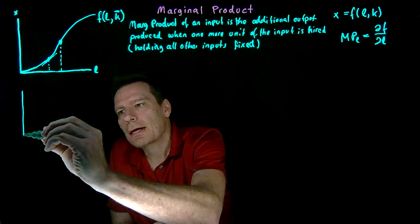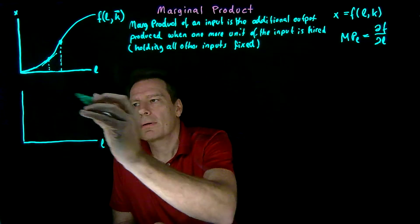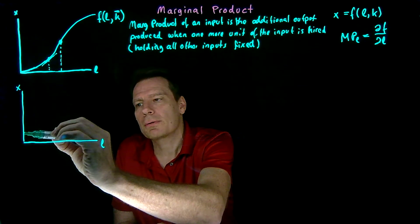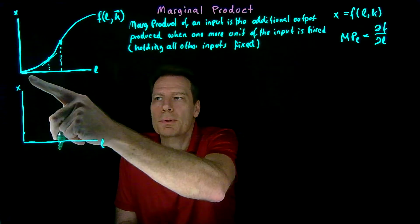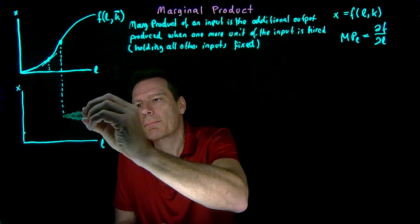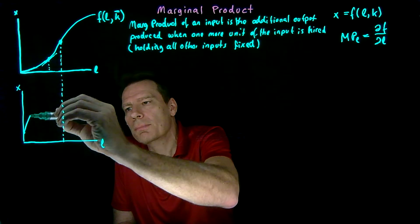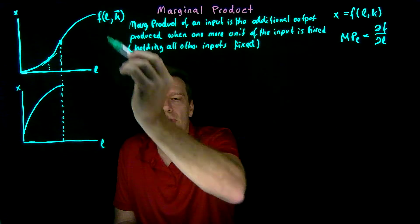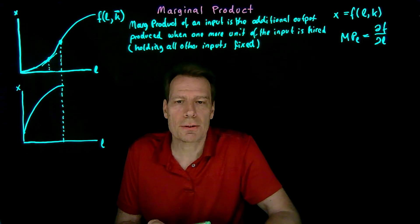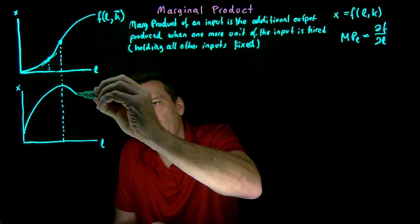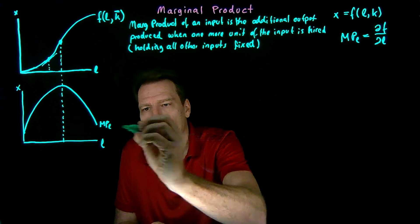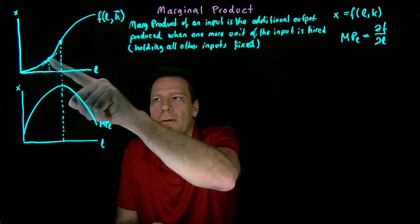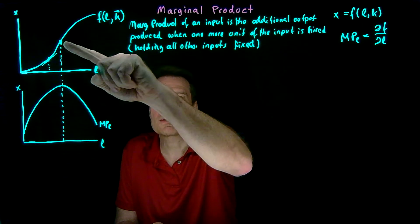We could graph what that looks like in a picture with labor and output on the axes. Initially the marginal product for the first units of labor is low — the first worker isn't adding a lot to output, the slope is shallow. Then the slope gets steeper and steeper up to this level of labor, so the marginal product of labor is increasing. But once we get past this amount of labor, additional workers are adding less and less to total output, so marginal product of labor is falling. You can see where the rising part and falling part arise from in the shape of the short-run production function.